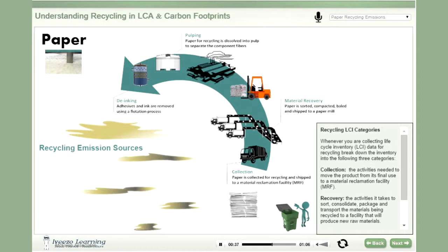Finally, if white recycled paper is being made, the pulp may need to be bleached using additional chemicals. If brown recycled paper is being made, the pulp does not need to be bleached. Now the clean pulp is ready to be made into new paper, or blended with virgin pulp, and then made into new paper products.